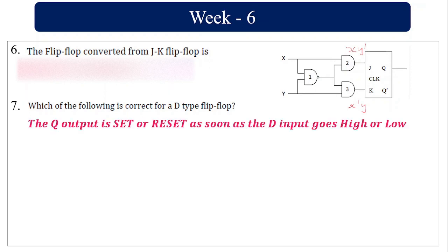For a D-type flip-flop, the Q output is set when the D input is high and reset when the D input goes low. In the truth table, when D is 0, irrespective of the present state, the next state is 0. When D is 1, whatever the present state, the next state is 1.